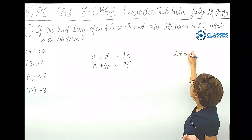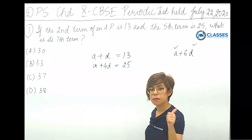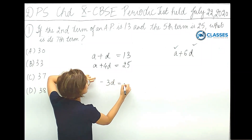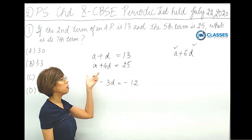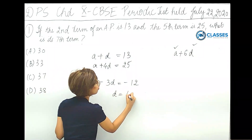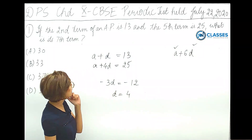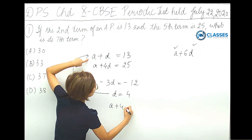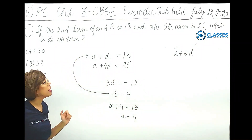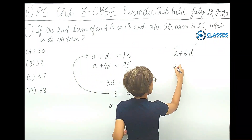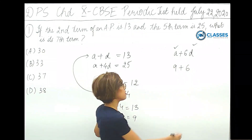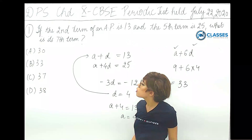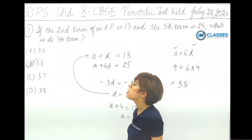Subtracting the two equations, 3d equals 3, so d equals 4. Now substituting d into the first equation: a plus 4 equals 13, so a equals 9. The seventh term is a plus 6d, which is 9 plus 6 into 4, giving 9 plus 24 equals 33. So option B is correct.